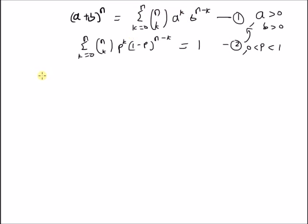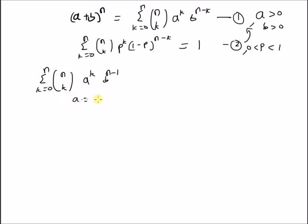Starting with the RHS of equation 1, we have summation from k = 0 to n of n choose k times a^k times b^(n−k), where a and b are positive numbers. Since a and b are both positive, we can define a as a product of (a + b) and a fraction p, where p is a proper fraction lying between 0 and 1. Since a is positive and b is positive, we can easily justify such a relation.